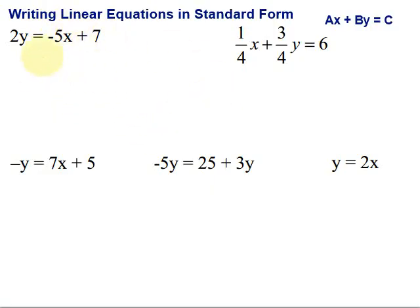So, to do that, what I'm going to do is go ahead and add 5X to both sides, because I want the X and Y on the same side here. So, when I do that, the X is positive. So, it's 5X plus 2Y, and that's equal to 7. So, took the X over there, now it looks like that. That's in standard form.